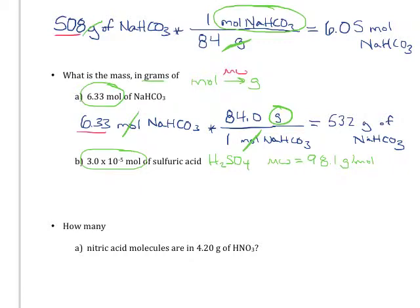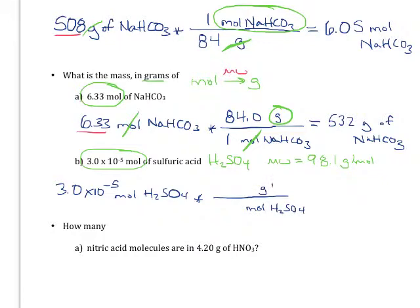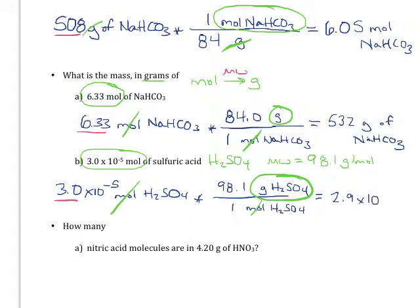Now we do our math. Starting with 3.0×10⁻⁵ moles of sulfuric acid, we want the moles to cancel because we want grams. We know there are 98.1 grams in every mole. Our units cancel appropriately. Make sure you're comfortable entering exponents to get the correct answer. Rounding to two significant figures, you should have 2.9×10⁻³ grams of sulfuric acid.